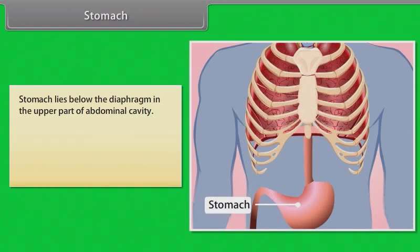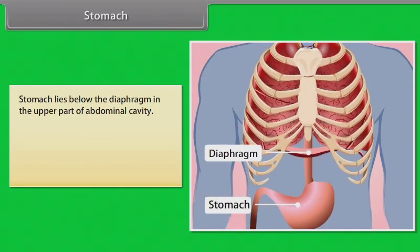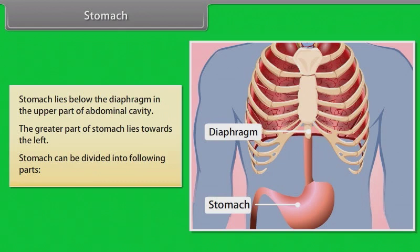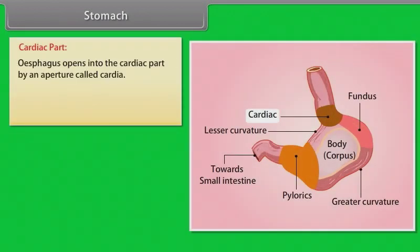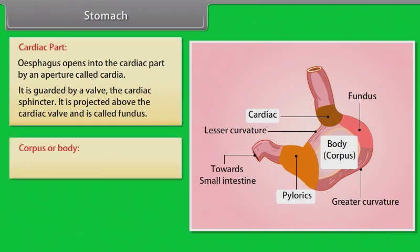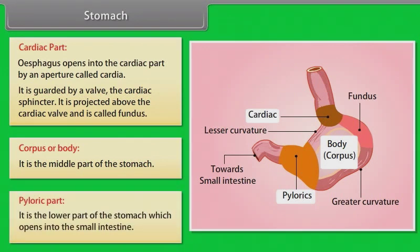The stomach lies below the diaphragm in the upper part of the abdominal cavity, with the greater part towards the left. The stomach is divided into: the cardiac part, where the esophagus opens via an aperture called the cardia, guarded by the cardiac sphincter; the fundus, projected above the cardiac valve; the corpus or body, the middle part; and the pyloric part, the lower part which opens into the small intestine.